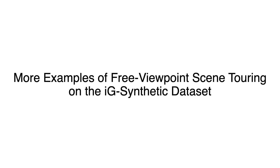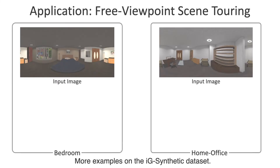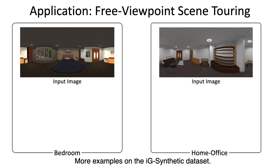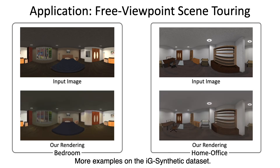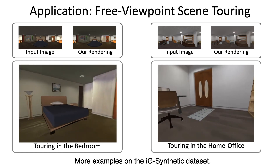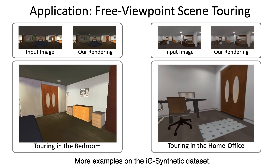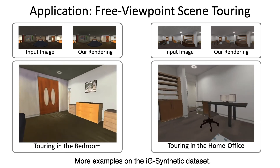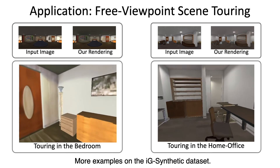Here are more examples of free viewpoint scene touring on the IG synthetic dataset. Similarly, we first capture one panoramic image of a synthetic room and fit the scene arrangement and lighting condition with our optimization. Then, we can go on a free view scene touring, where the object placement and lighting condition are consistent with the input image.